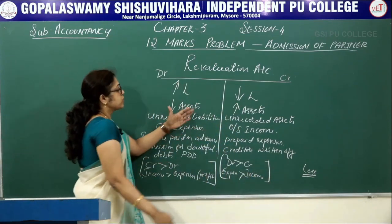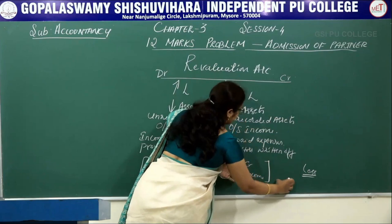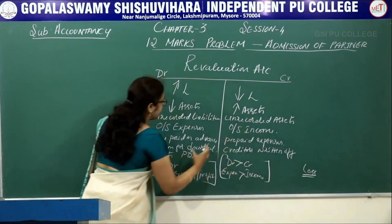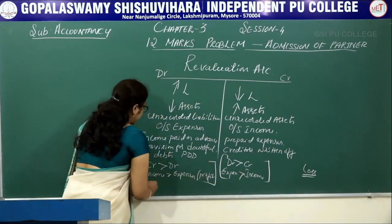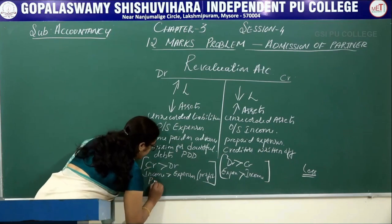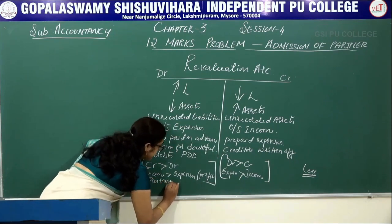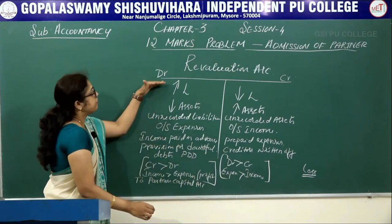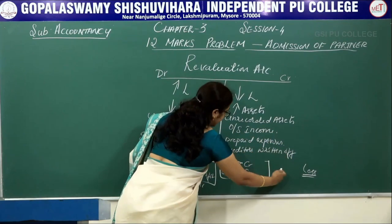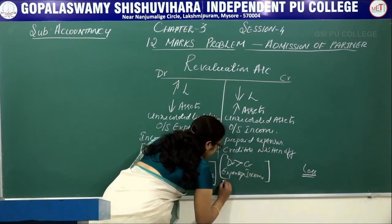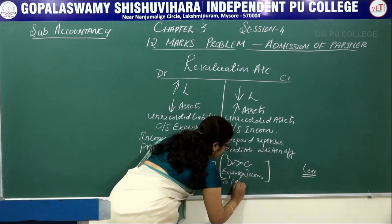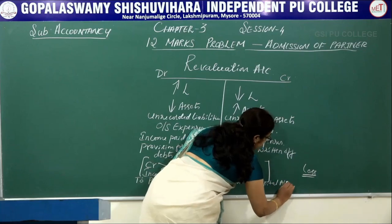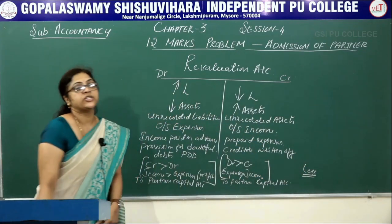If the credit side amount is greater than the debit side, you get a profit. When you total both sides: if the credit side is more than the debit side, you get profit, and that balance should be transferred to the partners capital account. If the debit side is greater than the credit side, you get a loss, and that balance is also transferred to the partners capital account.